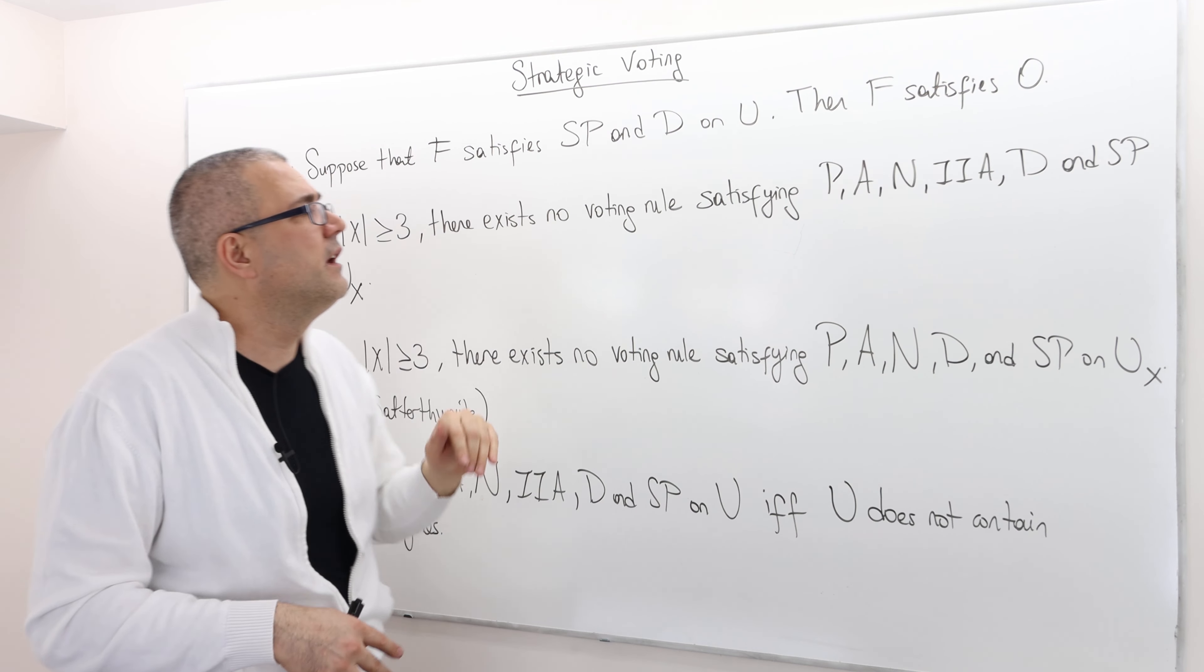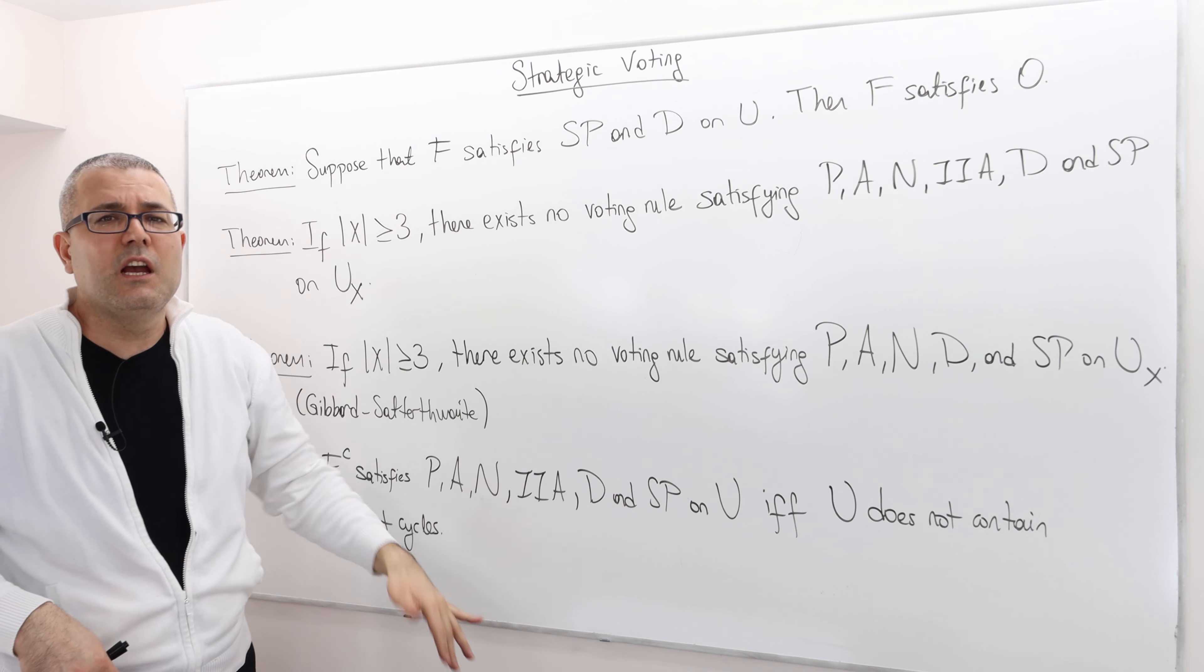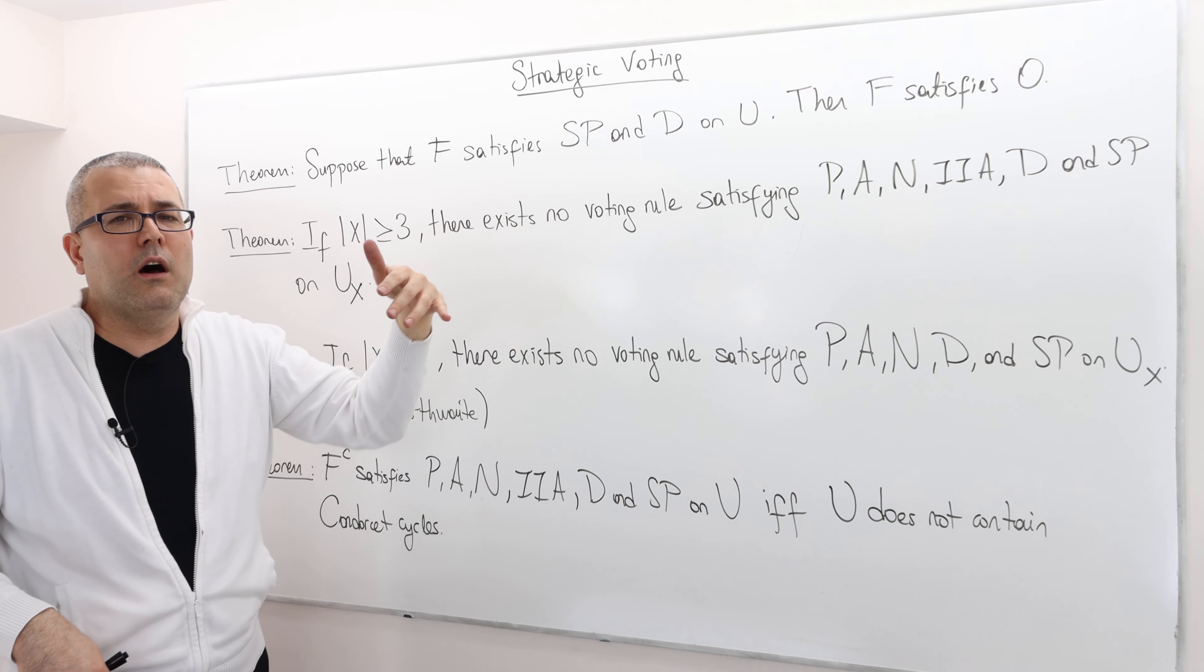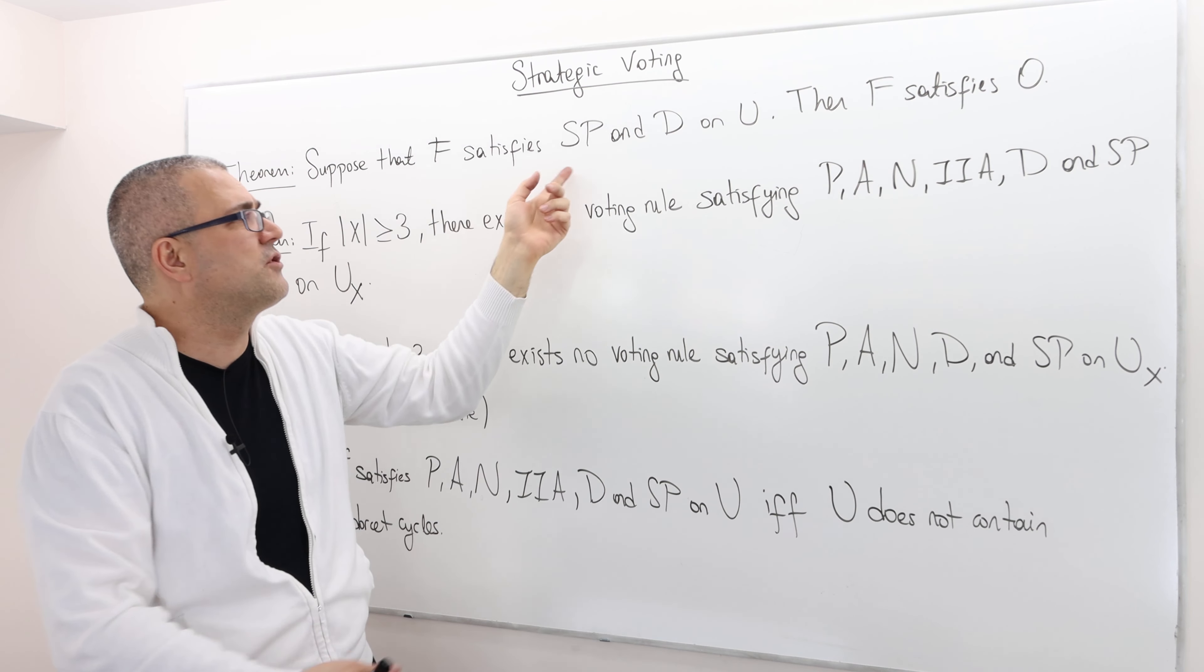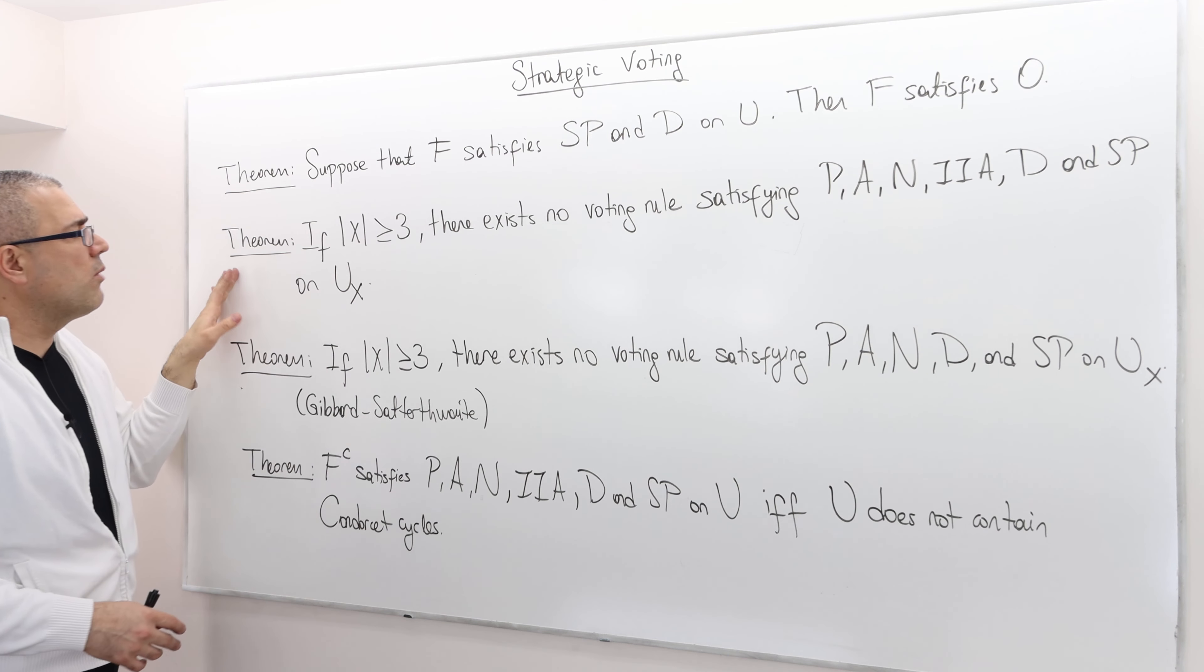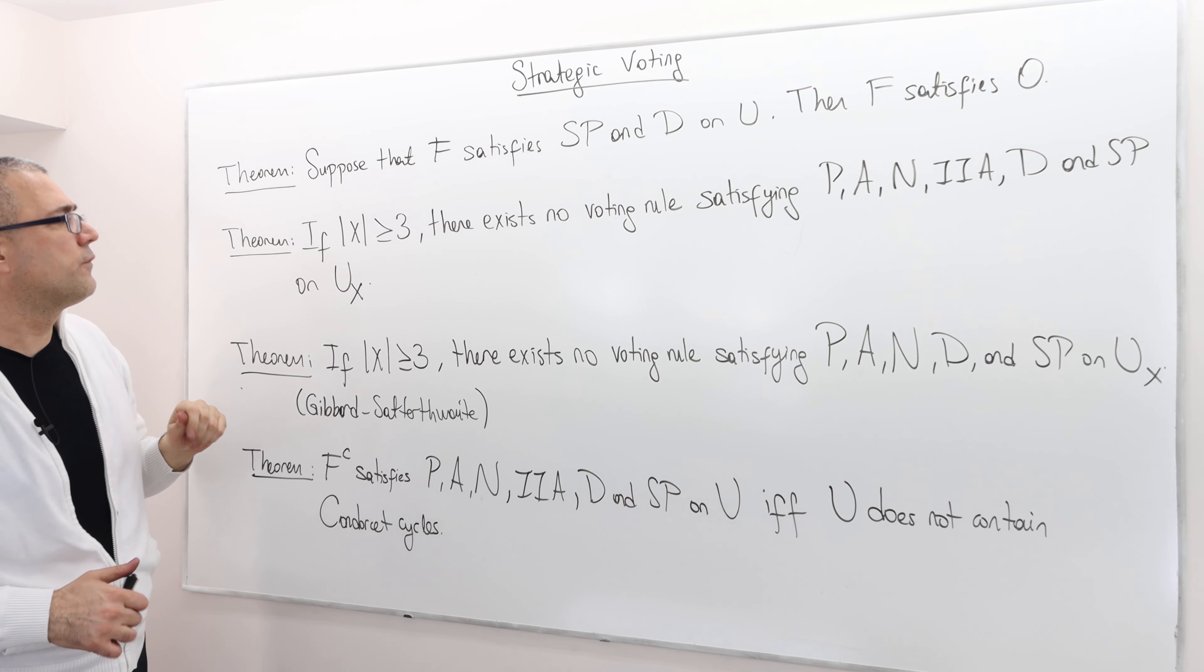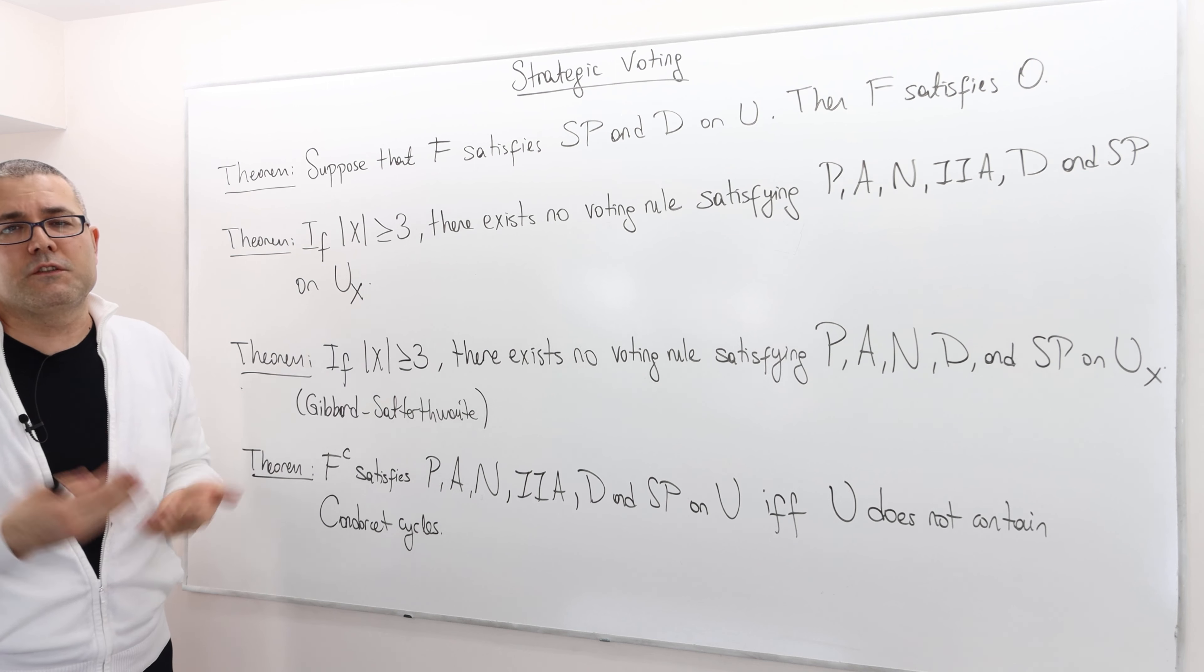So that's a very important theorem because for the rest of our results we're going to ignore the axiom ordinality because it is going to be implied by strategy proofness and decisiveness anyhow. Well the next theorem is unfortunately an impossibility theorem which kind of directly follows from Arrow's impossibility theorem.